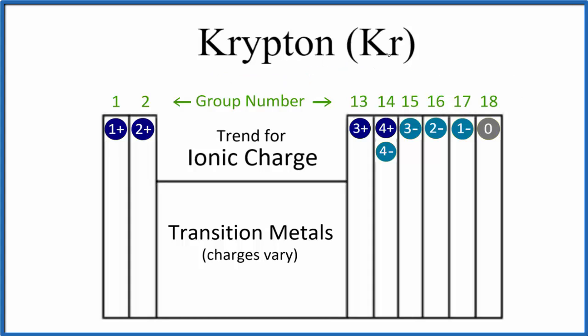So when we look at the ionic charge, we're trying to figure out the charge that krypton would have when it's an ion. We can use this general trend, this general pattern from the periodic table.